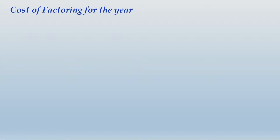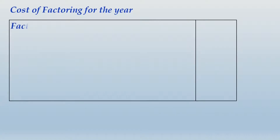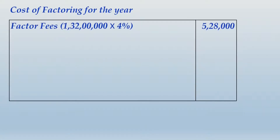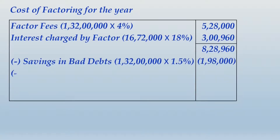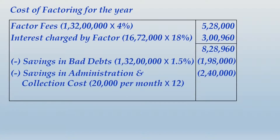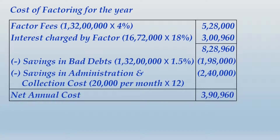Now compute the cost of factoring for the year considering this change. Factor fees for the entire year will be 5 lakhs 28,000. The interest charged by the factor under Case 2 will be 18 percent of 16,72,000, and the aggregate comes to 8 lakhs 28,960. From this subtract the savings in bad debts and the savings in administration and collection cost — these two figures do not change.